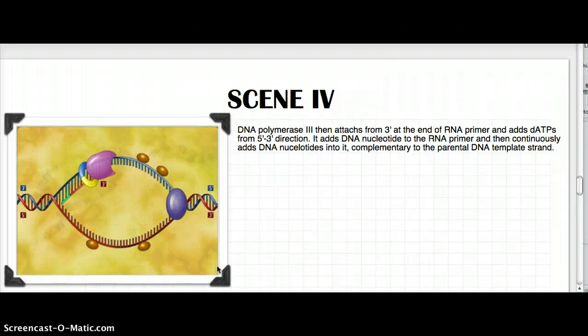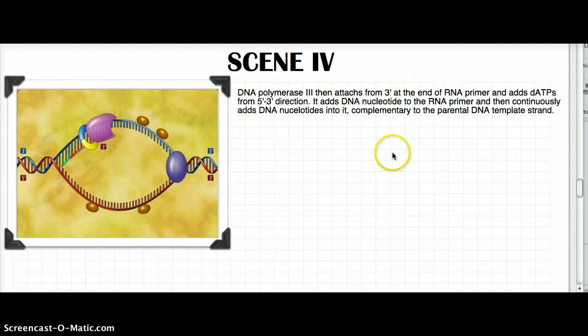DNA polymerase III attaches from the 3 end of the RNA primer and adds dATPs from 5 to 3 direction. It adds DNA nucleotides to the RNA primer and then continuously adds DNA nucleotides, which is complementary to the parental DNA template strand. It's important - it's complementary to the parental DNA template strand.